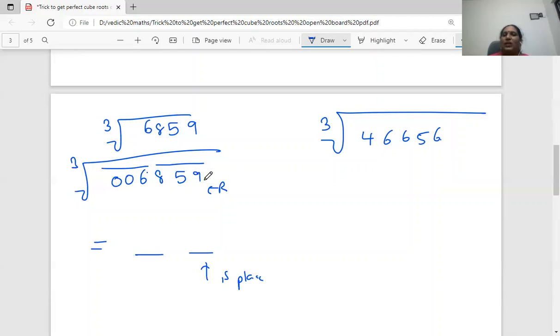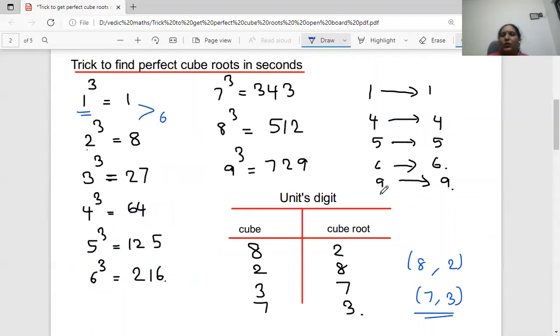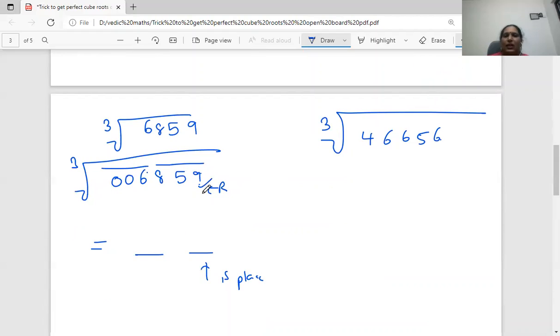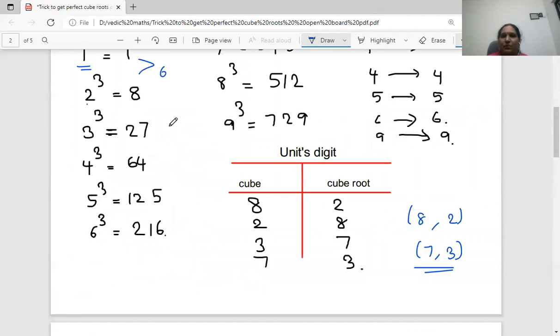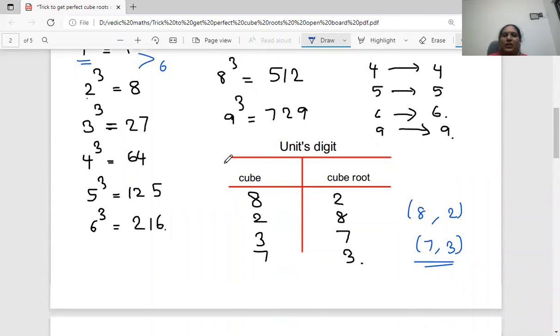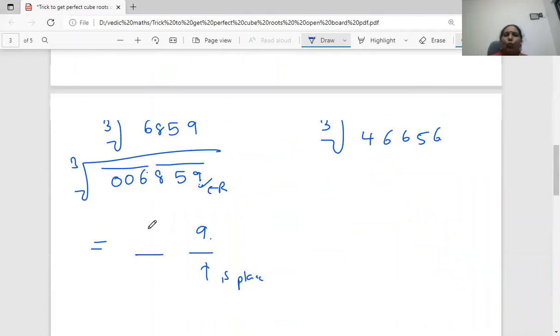So to get the 1's place, we just check the 1's place in the cube roots. So here, 9 is there. So if 9 is there, the cube root of that, what you should get? You should get 9 only. So seeing this 9 in the 1's place, I will write 9. Because 9 cube root, you will get 9 only in the 1's place. Then let's check 6. 6 is coming between which 2 cubes? 6 is coming between 1 cube and 2 cube. I have to pick the small number. Here, 1's place is 9. So the cube root of 6859 is 19.